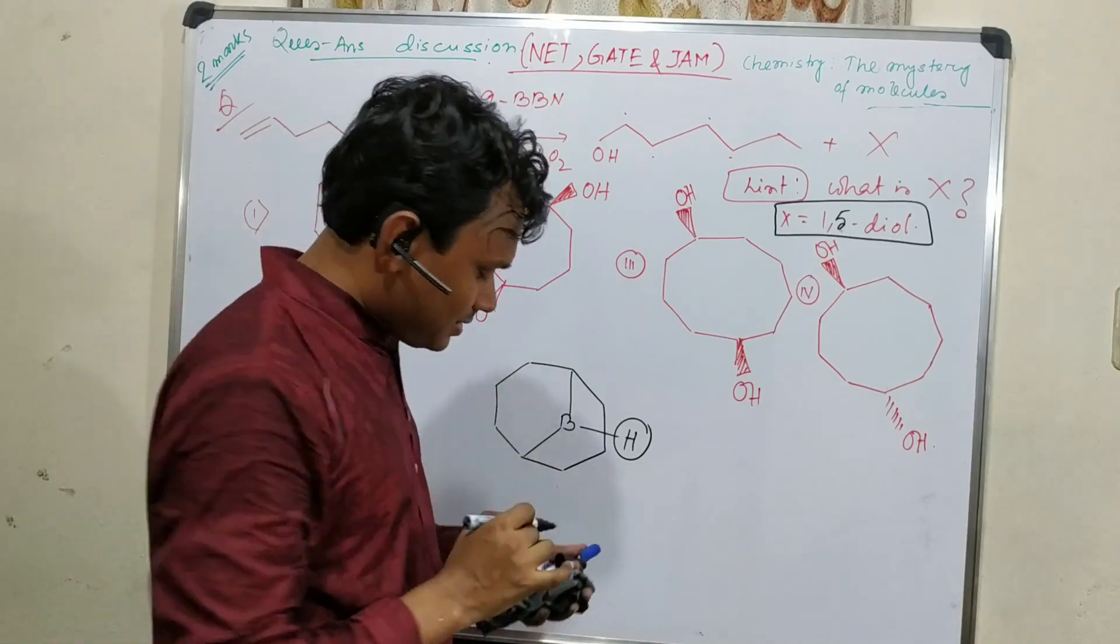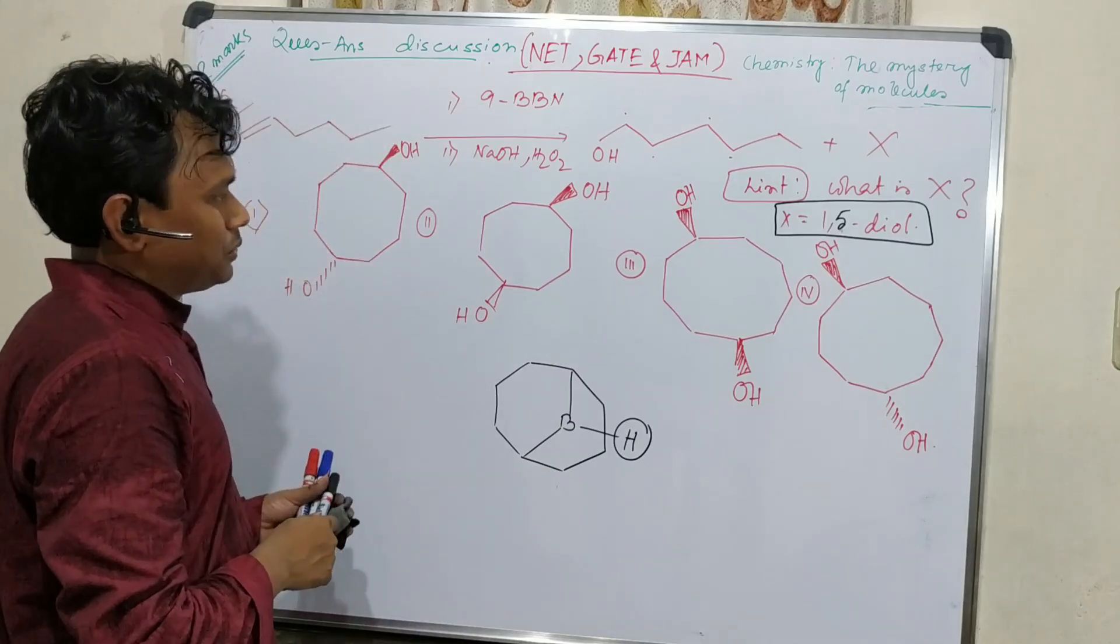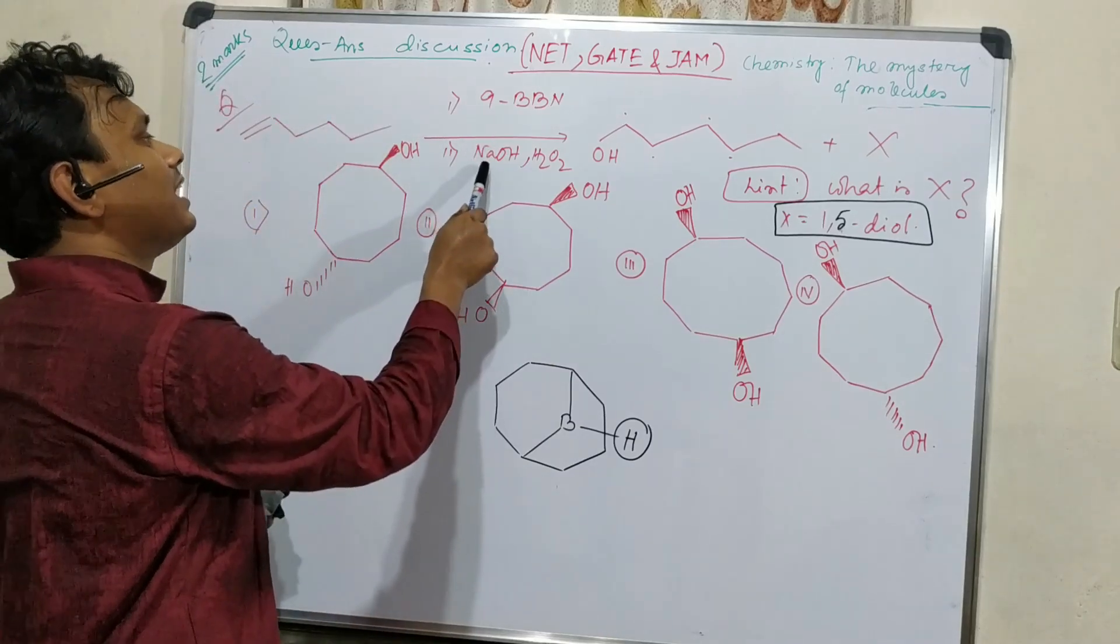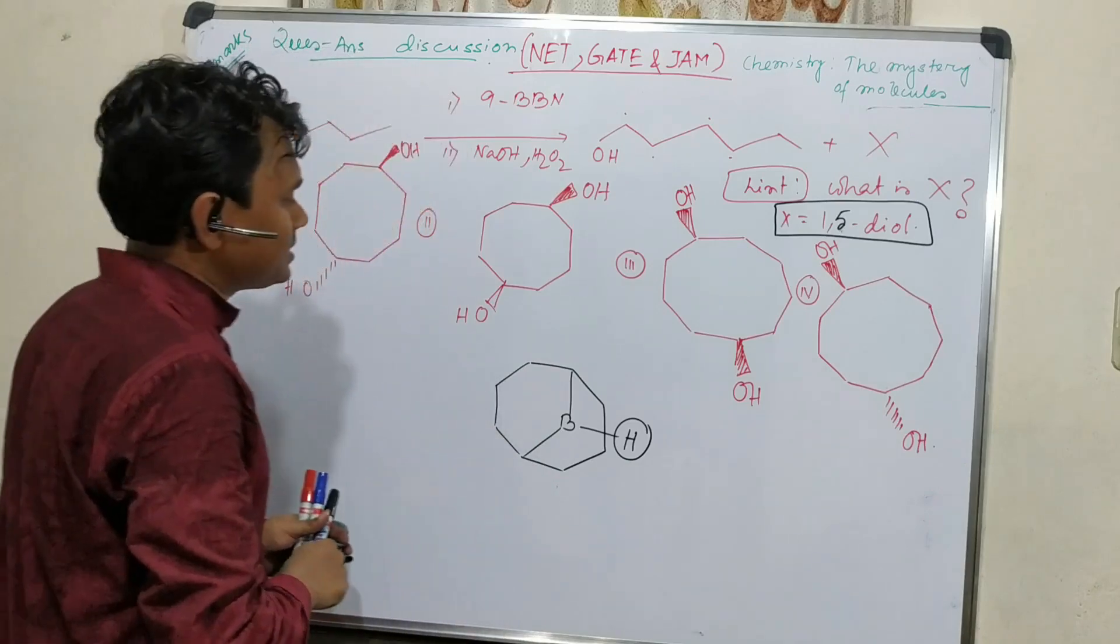I'll explain why. Second is sodium hydroxide and hydrogen peroxide. What does this reagent do? Actually, it hydroborates the 9-BBN hydration product.